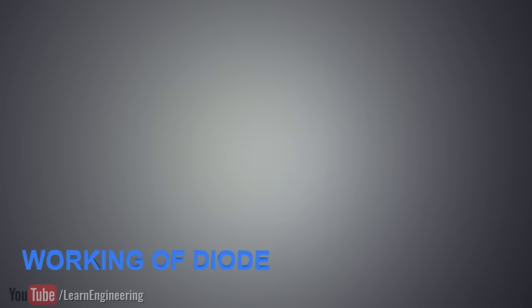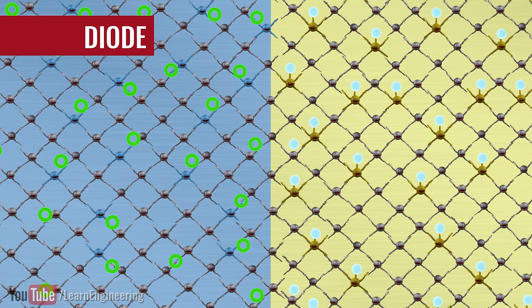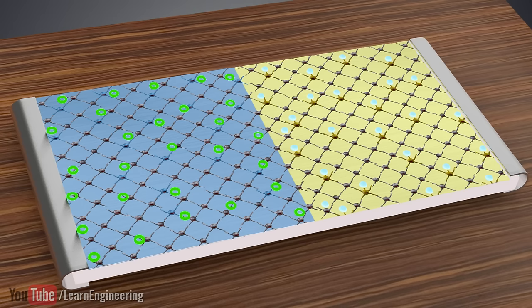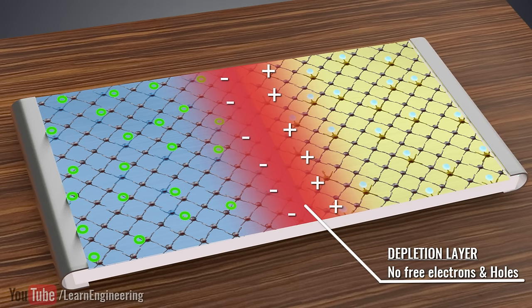A diode is formed when you dope one part of silicon as p-type and the other part as n-type. Something very interesting happens at the boundary of the n- and p-joint. The abundant electrons on the n-side will have a natural tendency to migrate to the holes that are available on the p-side. This will make the p-side boundary slightly negatively charged and the n-side slightly positively charged. The resulting electric field will oppose any further natural migration of the electrons.